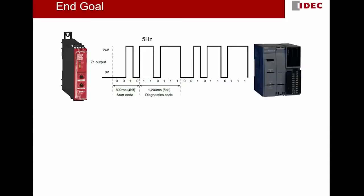So this is what we would like to achieve at the end of this tutorial. All HR6S safety relays from IDEC, regardless of the model, they all come with one terminal called Z-1. This Z-1 is constantly giving out a diagnostic pulse output, and this pulse output consists of the diagnostic information of the safety circuit and safety devices connected to this HR6S safety relay.